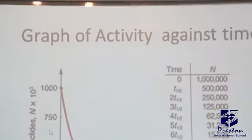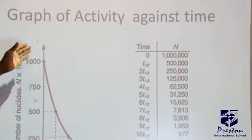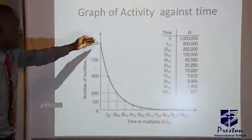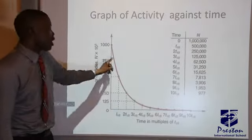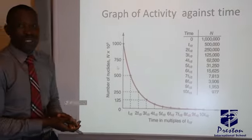The graph of activity against time. This is the graph of activity against time. As the activity decreases, it decreases with time, so it is like this. It is not a straight-line graph because it's actually a random process.